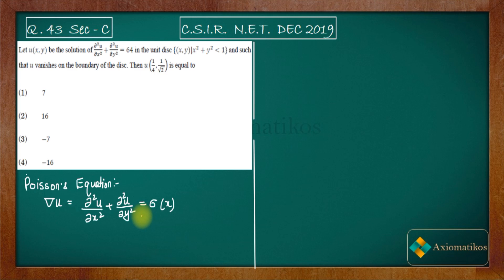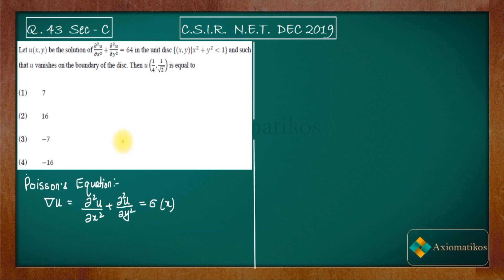Solving Poisson's equation in general is a lengthy process, so we are not going to do that here. The examiner is asking this problem so that you can use a counter-example or a clever guess. They don't want you to solve this properly using a full algorithm, because that is not feasible in an exam.